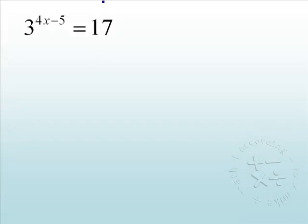We have 3 raised to the 4x minus 5 equals 17. The reason the 1 to 1 property will not work here is because there is no way we are going to write 17 as a base of 3 and no way we are going to write 3 as a base of 17.